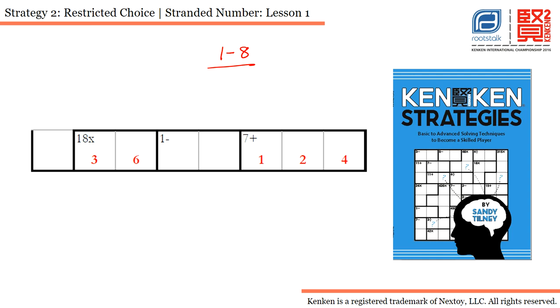Let me explain how I came out with these solutions. It says 18 multiplication. I have two cells, I need to multiply two numbers and the answer has to be 18, so this was the only possible combination: 3 and 6.